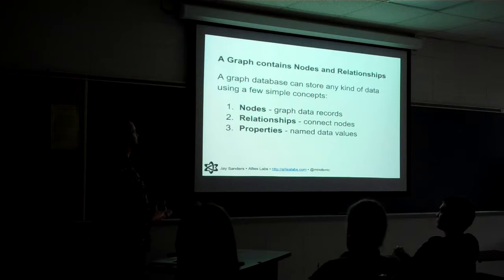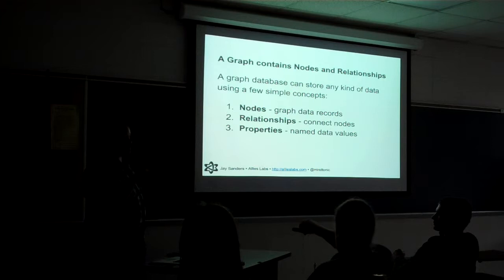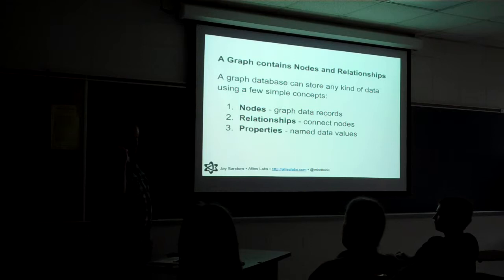Can a relationship have more than two nodes in it, or is it always between two? It's a relationship between two nodes, and it also has a direction. So it's directed — which is important. That's why I put arrows.